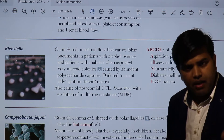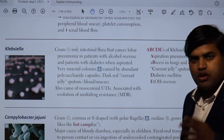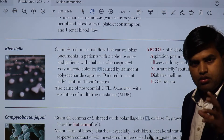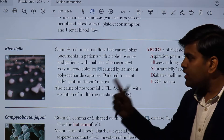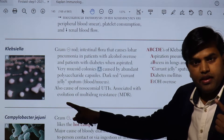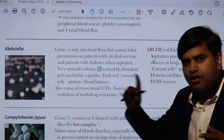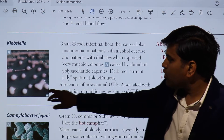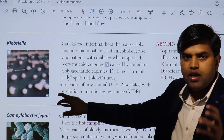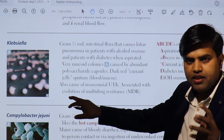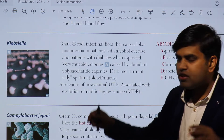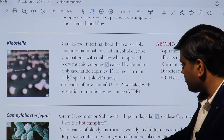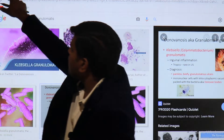Moving on to another gram-negative lactose-fermenting enteric bacterium — Klebsiella. Klebsiella pneumoniae is mainly responsible for causing lobar pneumonia. From a microbiological point of view, they are gram-negative lactose-fermenting enteric bacteria similar to E. coli, but you can differentiate them by the presence of mucosity — this viscosity. They have a very mucoid polysaccharide capsule with a thick slime layer, making them appear very wet and mucoid compared to E. coli.